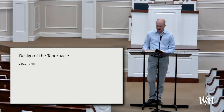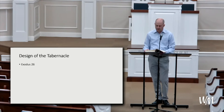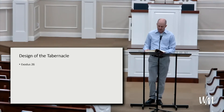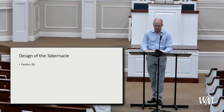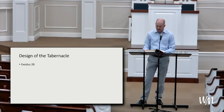You shall also make curtains of goat's hair to be a tent over the tabernacle — eleven curtains, each thirty cubits long and four cubits wide. You shall couple five curtains by themselves and six by themselves, and make fifty loops and fifty bronze clasps to couple the tent together as one. The remnant shall hang over the back and sides of the tabernacle to cover it. You shall also make a covering of ram skins dyed red, and a covering of badger skins above that.